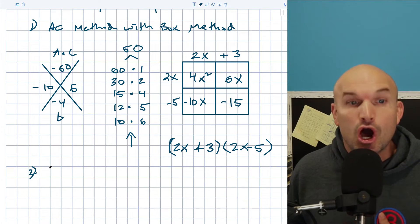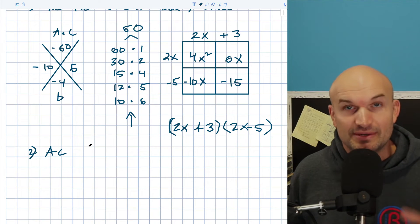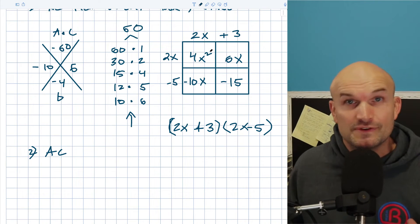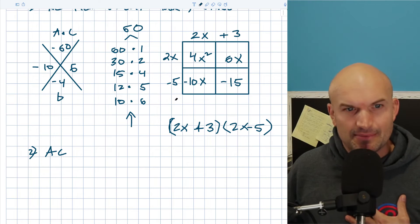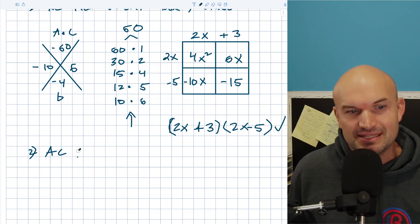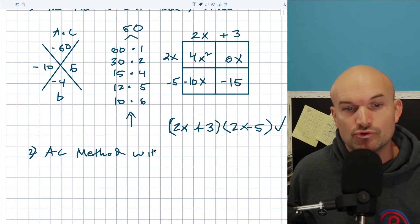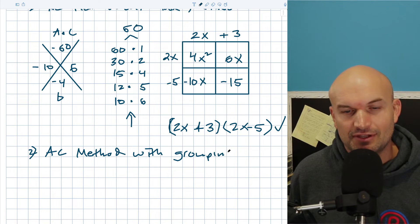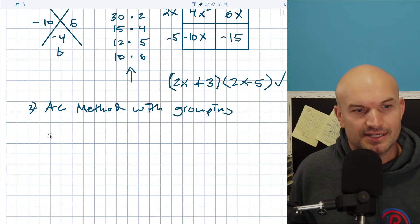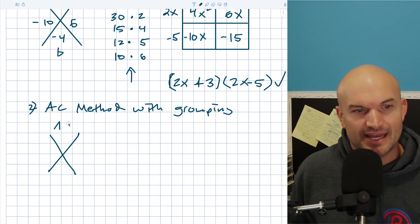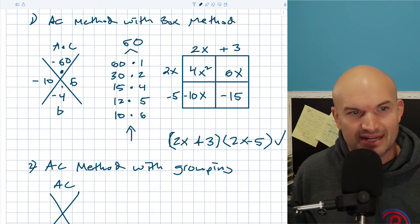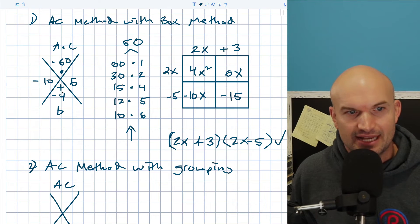Now I'm not going to need to do as much talking to go through the next method. Instead of the box method, let's do another way that might not take as much space. This is still going to be with the AC method, but now we're going to do it with grouping. So if you have a little bit better understanding of factoring, this one might be a really good idea. You're still going to do the AC method: multiply A times C to get negative 60, and you need two numbers that add to give you negative four — that's negative 10 and positive six.